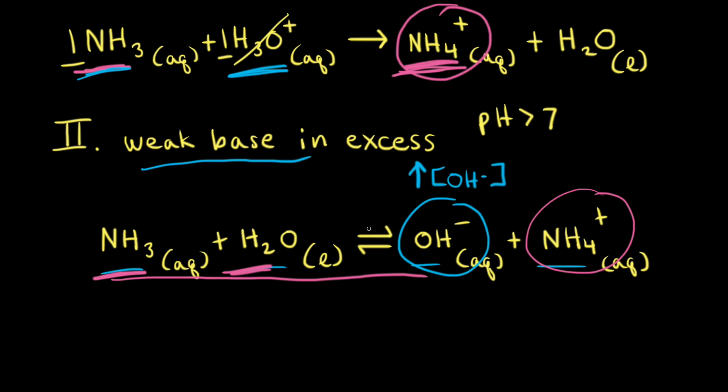Alternatively, recognize that NH4+ is a weak acid and NH3 is its conjugate base. Therefore, if we have similar amounts of a weak acid and its conjugate base, we have a buffer solution and can calculate the pH using the Henderson-Hasselbalch equation.